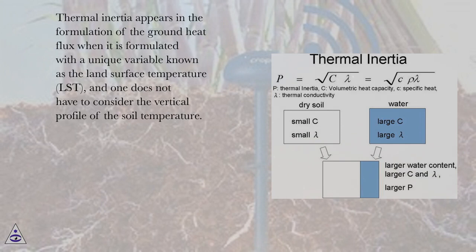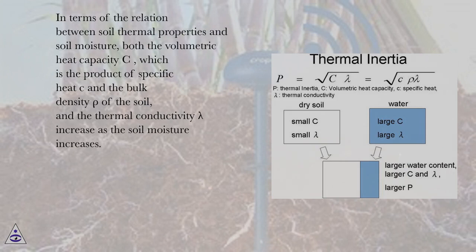and one does not have to consider the vertical profile of the soil temperature. In terms of the relation between soil thermal properties and soil moisture, both the volumetric heat capacity C, which is the product of specific heat c and the bulk density ρ of the soil, and the thermal conductivity λ increase as the soil moisture increases.